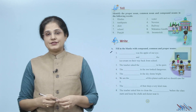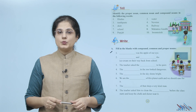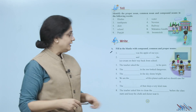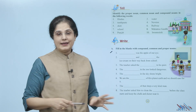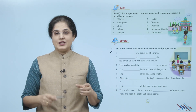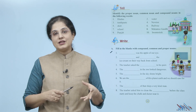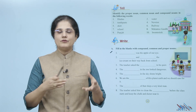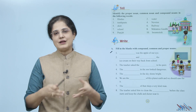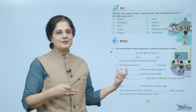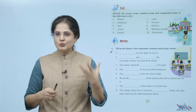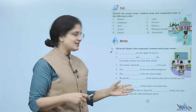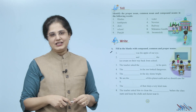Let us look at this activity. Fill in the blanks with compound, common and proper nouns. Yeh jo aapko sentences diye gaye hain, inke blanks mein compound, common ya proper noun jo bhi suitable ya appropriate hai, use likhein. For example: dash was the apple of our eye. Ab yahan pe aap koi ek proper noun lekar ke naam likh sakte hain. Isi tarah se aap baaki saare sentences ko bhi fill karein.